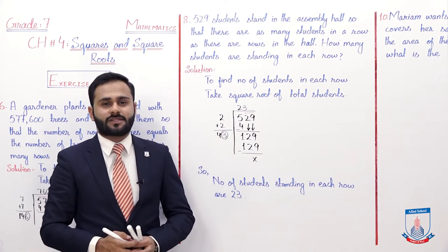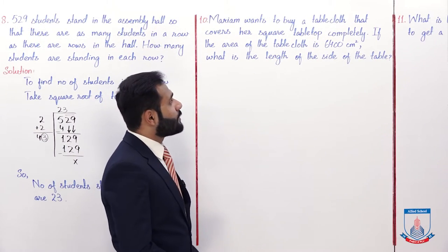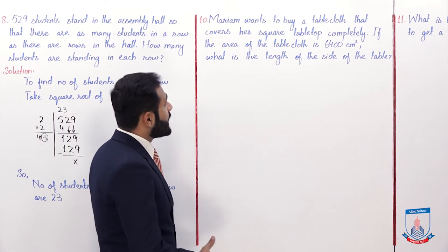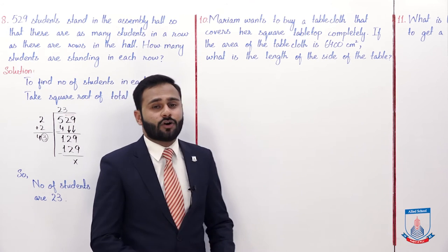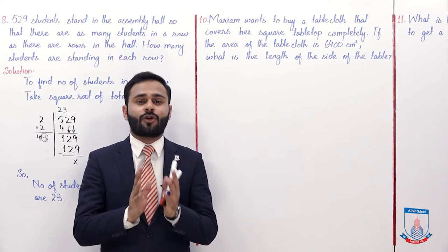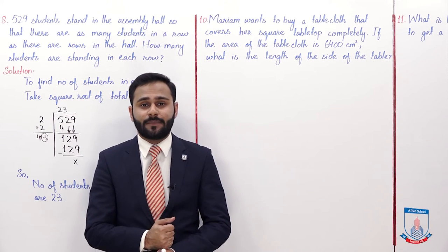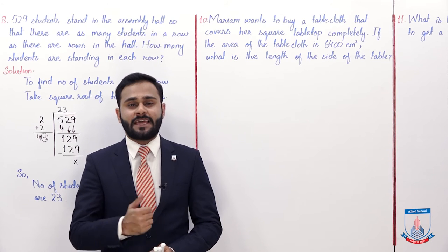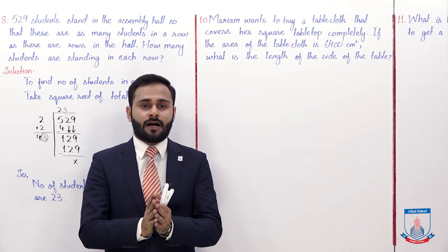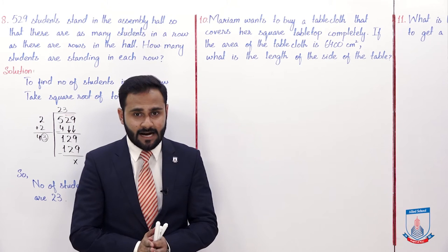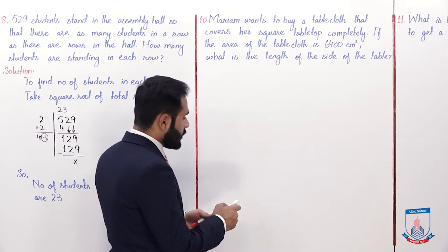Clear? I hope this question is understood. Let's solve the next question, number 10. Mariam wants to buy a tablecloth that covers her square table top completely. If the area of the tablecloth is 6400 cm², what is the length of the side of the table? Since area equals L squared, we need to find the length.